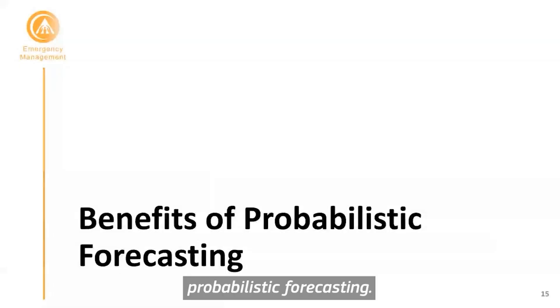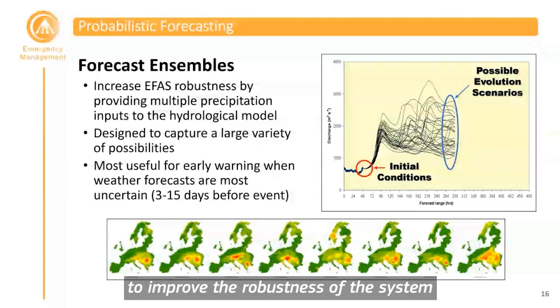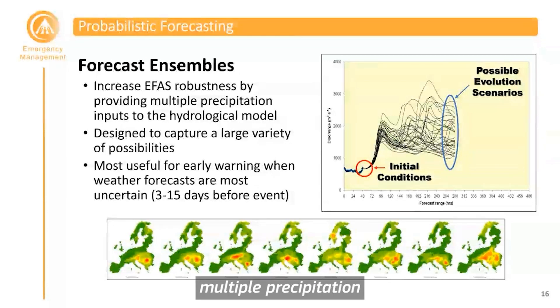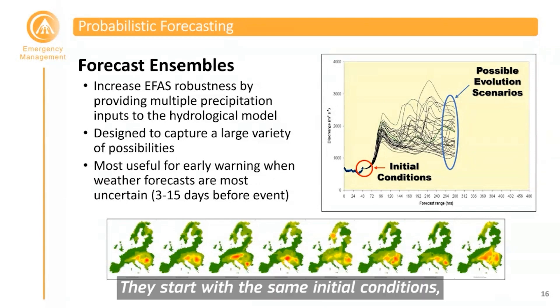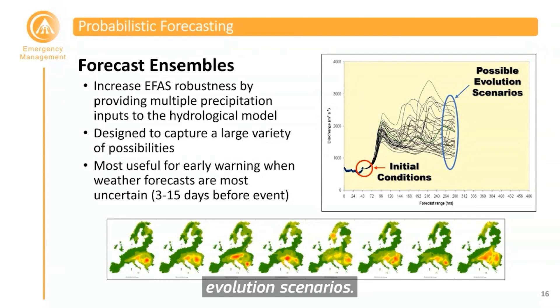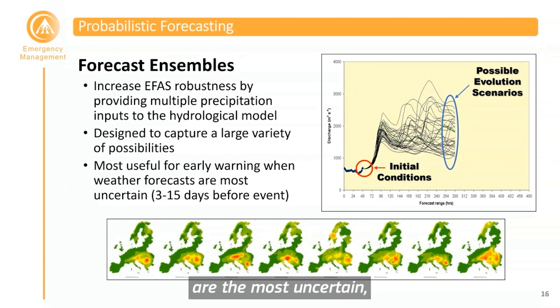EFAS uses forecast ensembles to improve the robustness of the system by providing multiple precipitation inputs to the hydrological model. These forecast ensembles are designed to capture a large variety of possibilities. We start with the same initial conditions, and then it grows into different possible evolution scenarios. Errors grow over time, and extreme events may be captured by only one or a few members, but they are really useful for early warning when weather forecasts are most uncertain, between 3 to 15 days before an event occurs.